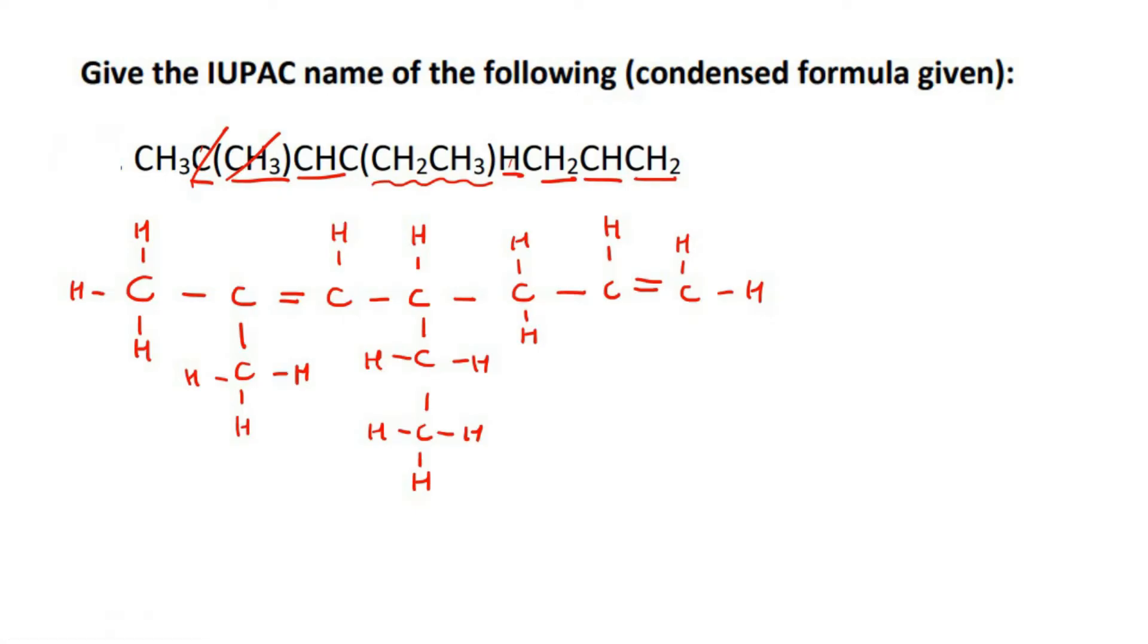And so now we need to come up with the name of this. So we know that this is an alkene, so if we had to label it from the left, this would be carbon 1, 2, 3, 4, 5, 6, 7. So your double bond would be on carbon 2 and carbon 6. However, if we rather, so just remember 2 and 6, if we rather label it from the right-hand side...